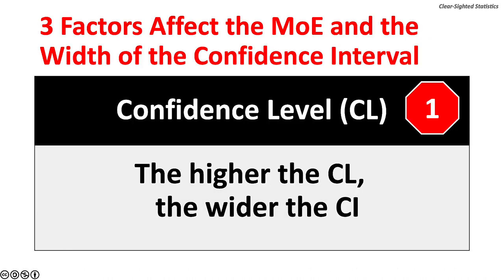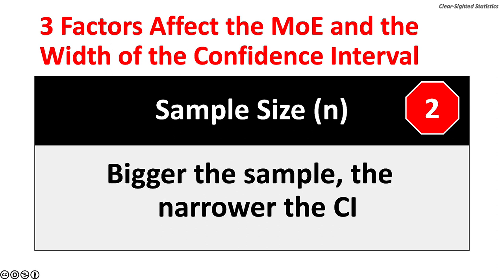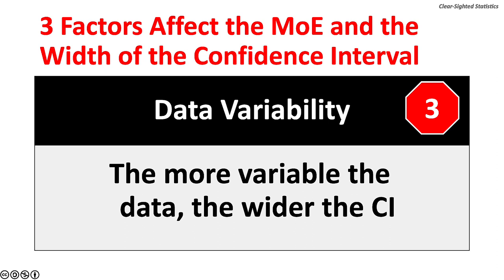Three factors affect the margin of error and the width of the confidence interval. One, the selected confidence level — the higher the confidence level, the wider the confidence interval. Two, sample size or n — the bigger the sample, the narrower the confidence interval. Three, data variability — the more variable the data, the wider the confidence interval. As we shall see, data variability is measured using the standard error of the mean or the standard error of the proportion.